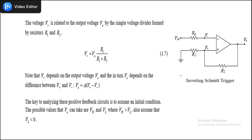This circuit is an inverting Schmitt trigger because the supply voltage Vin is connected to the inverting terminal. Drawing a parallel between the negative feedback circuit and positive feedback circuit: the output V0 feeds into the non-inverting terminal, whereas in negative feedback it always fed into the inverting terminal. So the working will change, though the analysis of the basic circuit will remain the same.